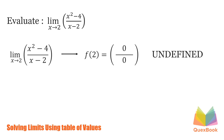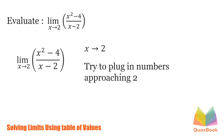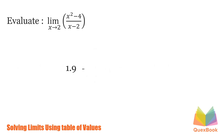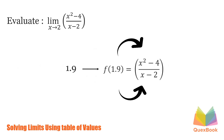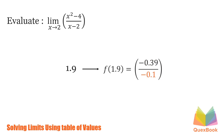So what we can do to solve this limit is to try to plug in numbers that are approaching or close to 2. So let's try 1.9. Evaluating the function, we have 1.9 squared minus 4 over 1.9 minus 2. 1.9 squared is 3.61, minus 4 is negative 0.39. Now, 1.9 minus 2 is negative 0.1. Dividing the function, we'll have 3.9.